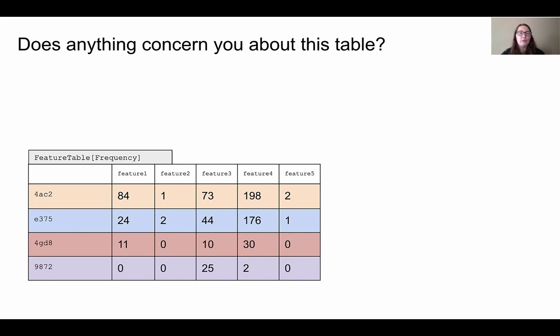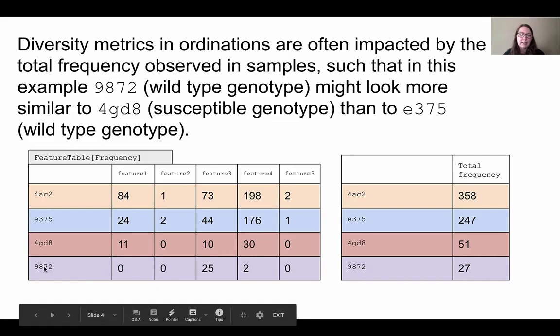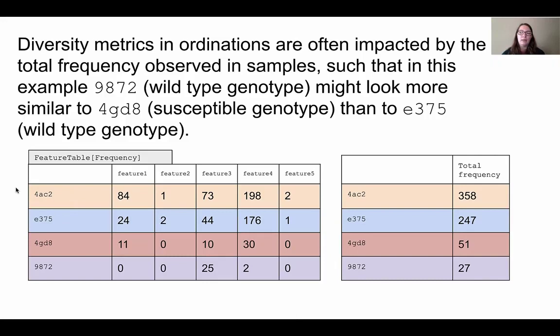Hopefully you paused and maybe you noticed something important: different samples have different total frequencies of features. For example, in sample 4ac2, the top yellow colored row, there is a total frequency of 358, but in sample 9872 on the bottom there are only 27 features total. We refer to this as sampling depth, where sample 9872 has a relatively low sampling depth compared to sample 4ac2 which has a high sampling depth.